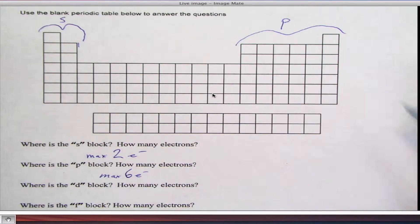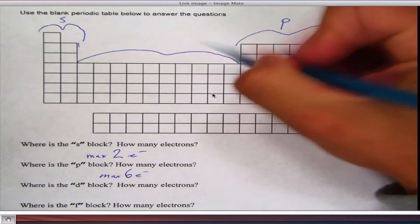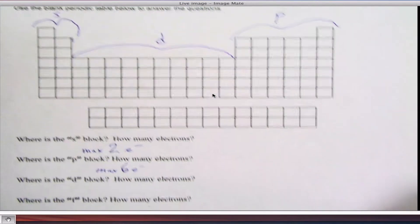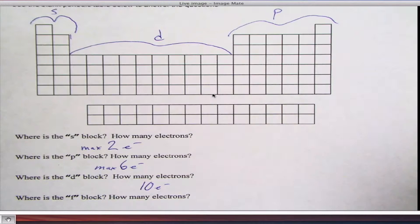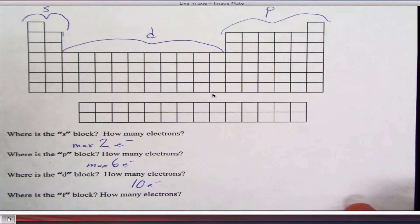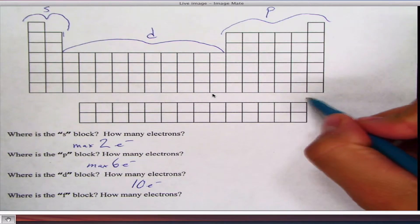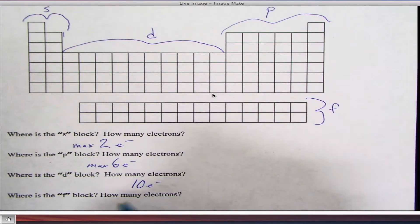And then we have our D block, which is this middle area here. This is the D block. The D block can have a maximum of ten electrons. And the last block, which is the only block that's left, and it's this whole area down here. This is the F block. The F block can have a maximum of fourteen electrons.